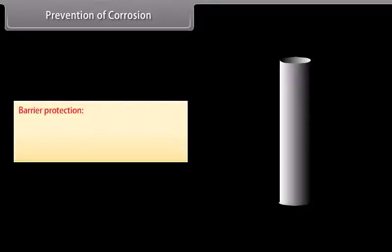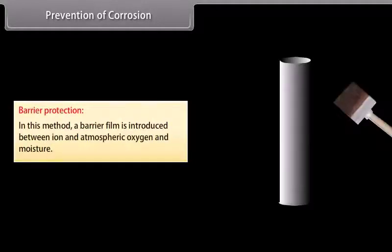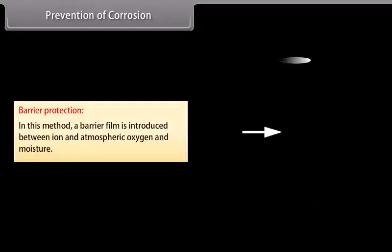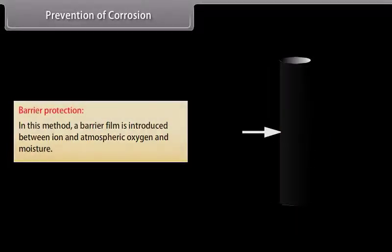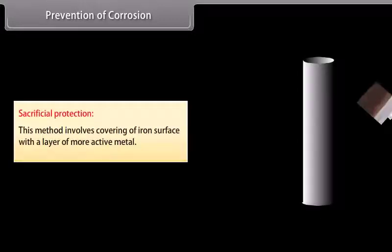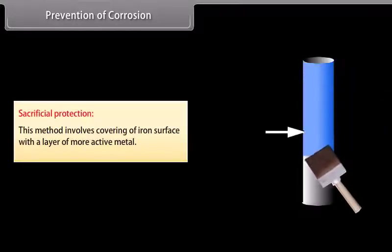Prevention of corrosion: There are many methods for protecting metals from corrosion. Some of these are as follows: Barrier protection - in this method a barrier film is introduced between iron and atmospheric oxygen and moisture.